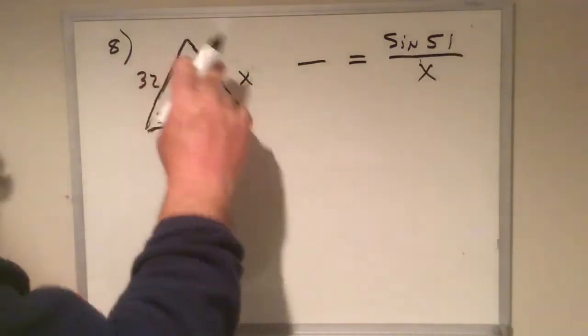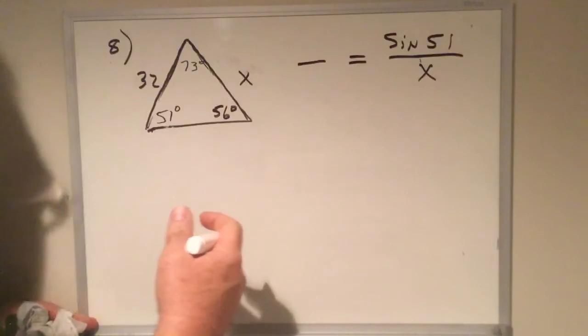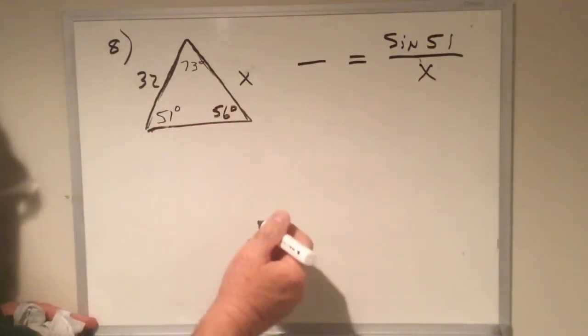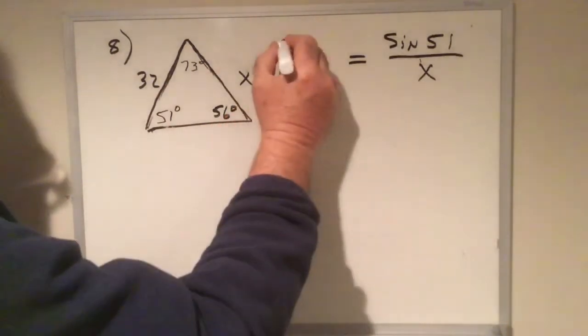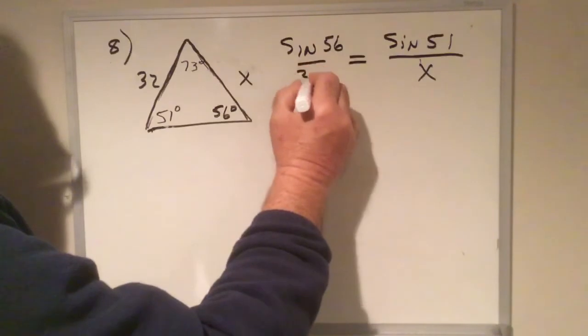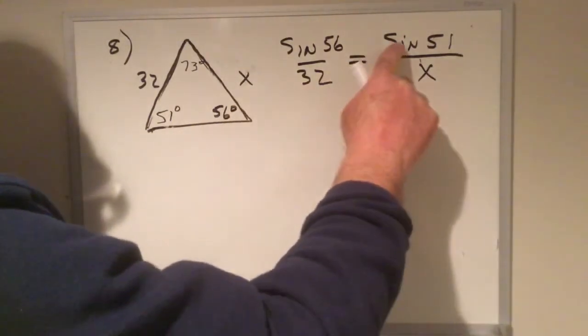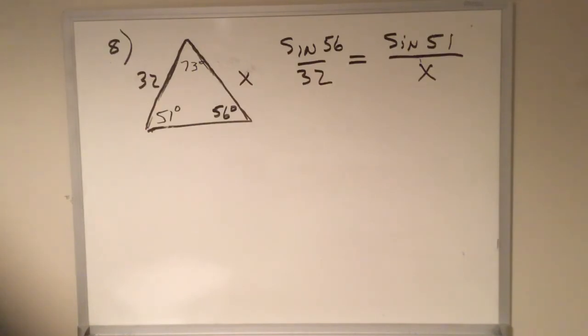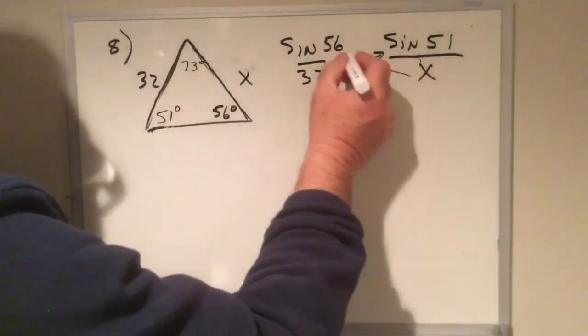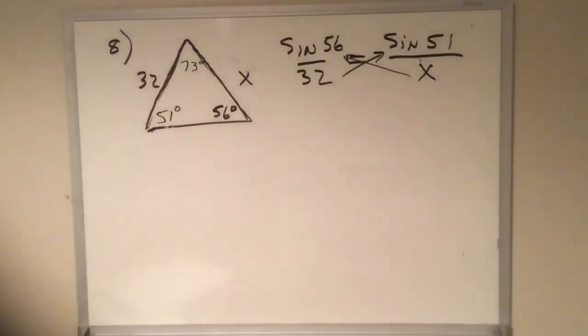As always, we're looking at our picture. Always fill in some things when it's obvious, if it's easy. I like to always fill in that extra angle measure. Here's our other side, sine 56 over 32. Now, we practiced nine of these last night, and we're getting used to the fact that in our calculator, we take 32 times sine 51 and hit enter. We're cross-multiplying. 32 times sine 51, enter. Then we're going to divide it by the sine of 56.